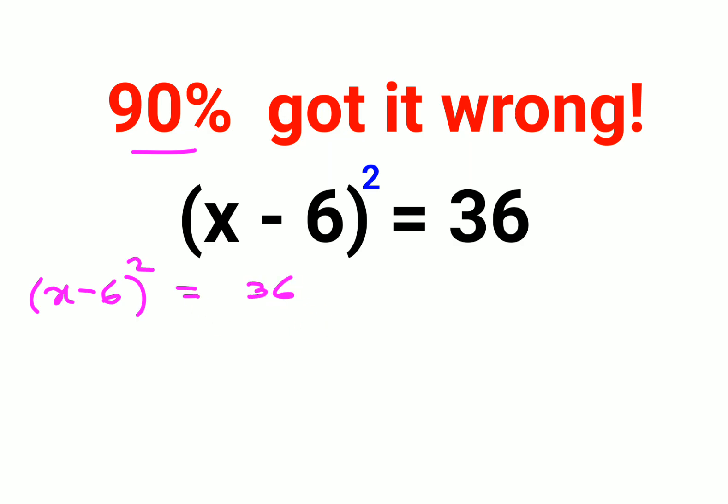So now in order to first get rid of this square, we'll put root on both sides. Okay, so this square and the root will cancel. So now you're getting X minus 6.